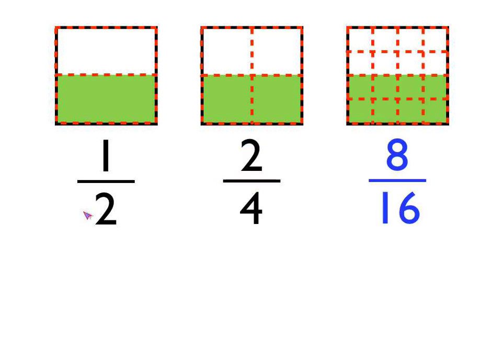Or maybe actually three different fractions. Have a look at the third square now. I've split that square up into 16 little equally-sized pieces, little squares. And you'll see that I've now shaded in eight of them. So we could also describe the proportion of that square that's shaded in as eight sixteenths.